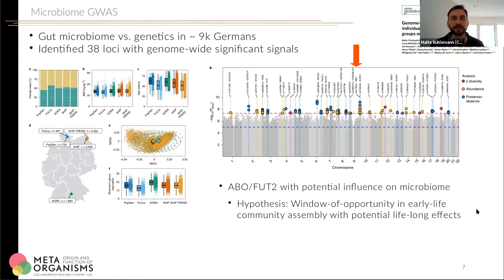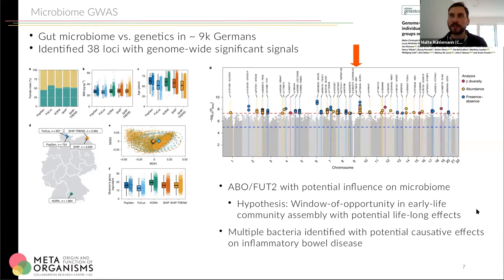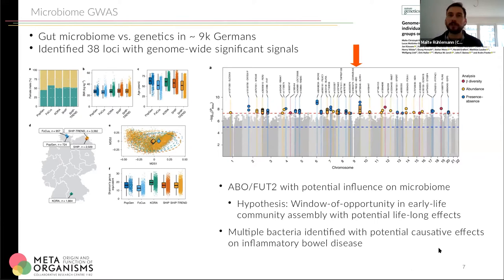In addition to these findings, we performed Mendelian randomization analysis, which tried to infer causality from the associations we find. Several bacteria were identified to have potential causative or protective effects on, for example, inflammatory bowel disease, which we will investigate further in future studies.